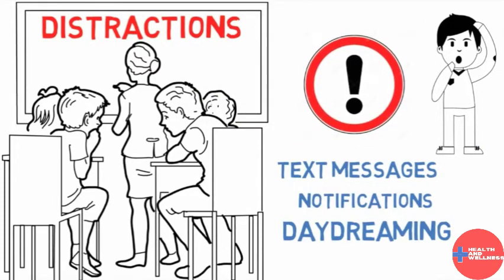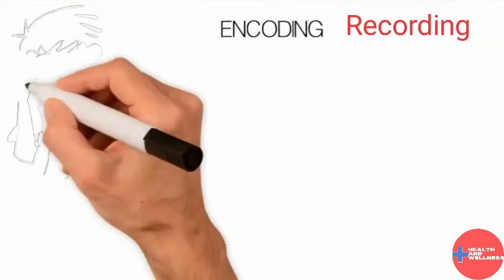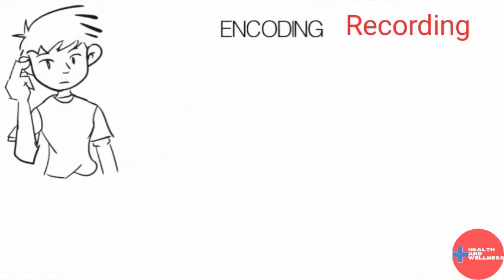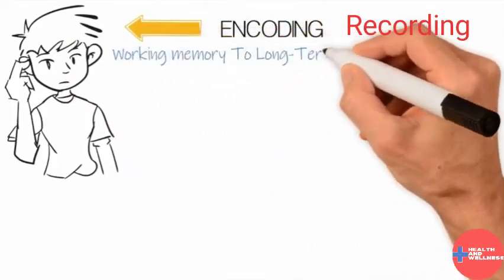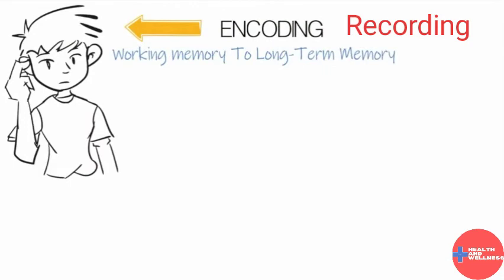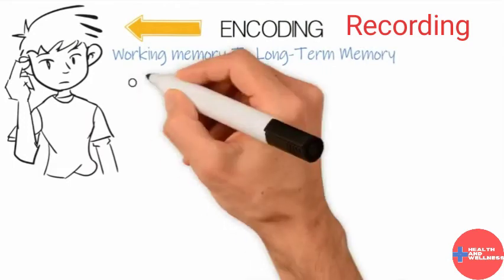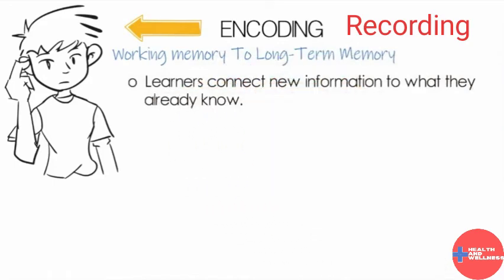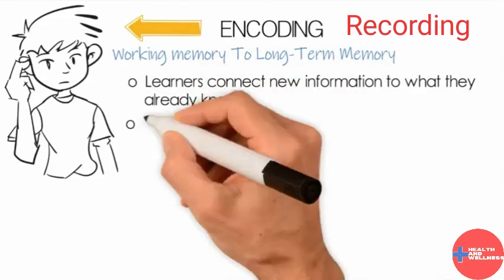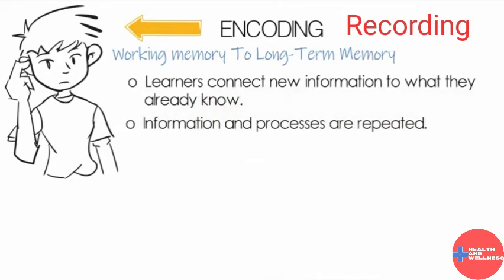Encoding. Once we are conscious of information in our working memories, we want to encode the information into long-term memory. Encoding is made easier when learners connect new information to what they already know. Information and processes are repeated.